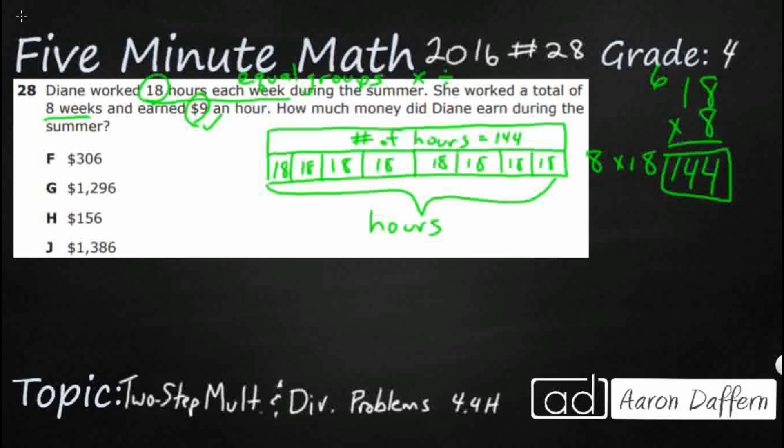Now what we need to do is we need to figure out how much money she earned during the summer. So she worked 144 total hours. So if we wanted to, we can draw another strip diagram. Now we're not going to complete it because it would be a bit tedious. So we're still looking for a total. So instead of the number of hours, we're looking for how much money she earned.